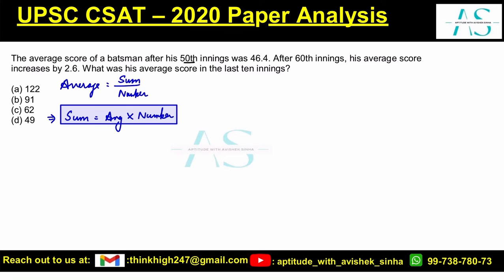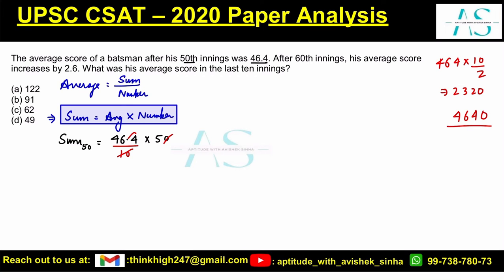Since the average after 50 innings is 46.4, the total runs in 50 innings is 46.4 into 50. Simplifying: 464 into 10 divided by 2 gives us 2320. So the total runs in 50 innings is 2320.